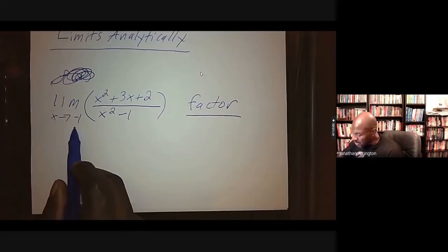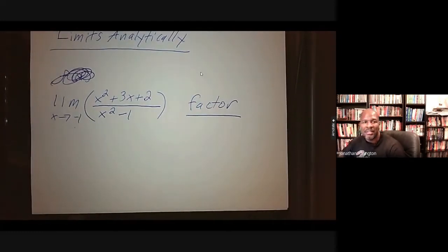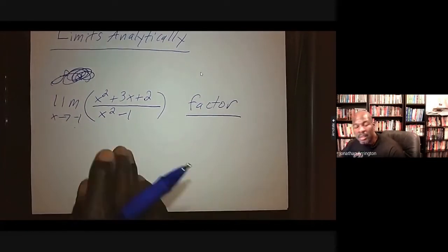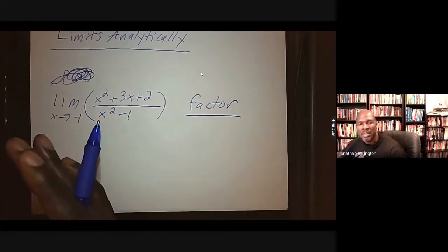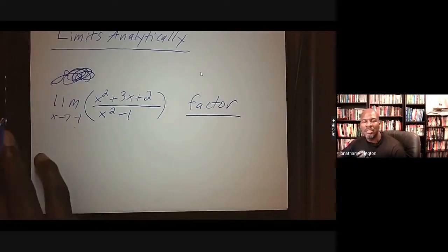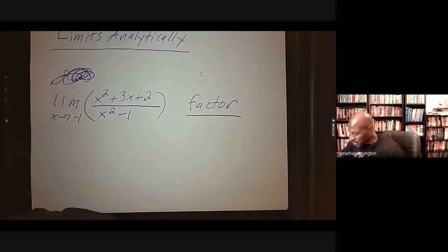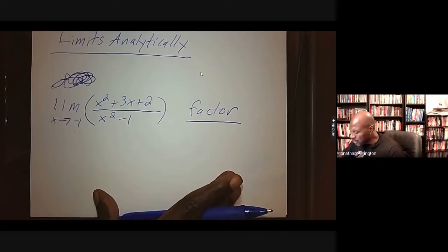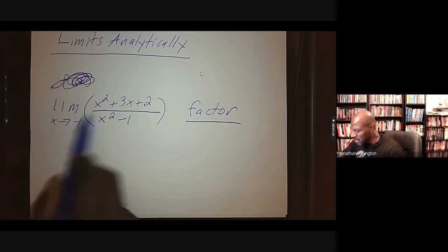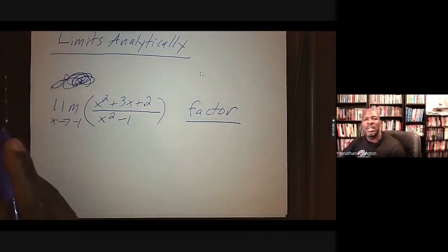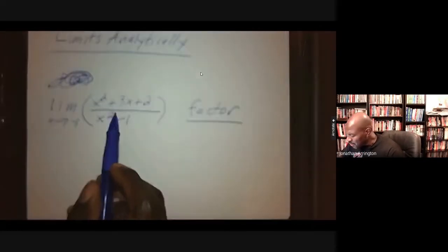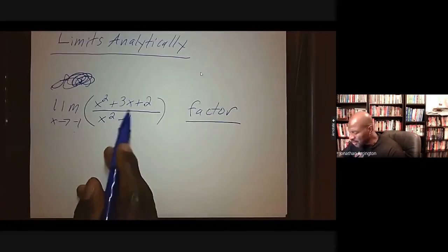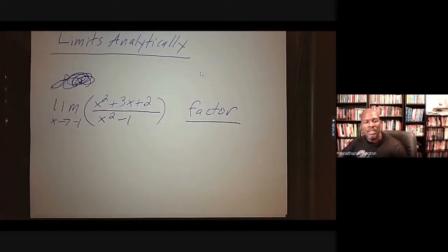If I plug this number in for x and get an undefined number — meaning my denominator is zero — there still is perhaps a chance that I can find a limit. It depends on the form of that undefined number. The problems you're going to see rarely render an answer just by plugging in. But you still want to plug it in anyway, because even if it comes out undefined, the type of form tells you if you need to do anything else.